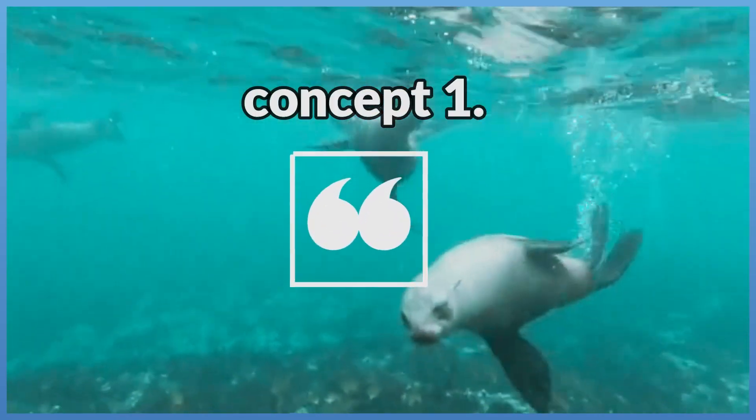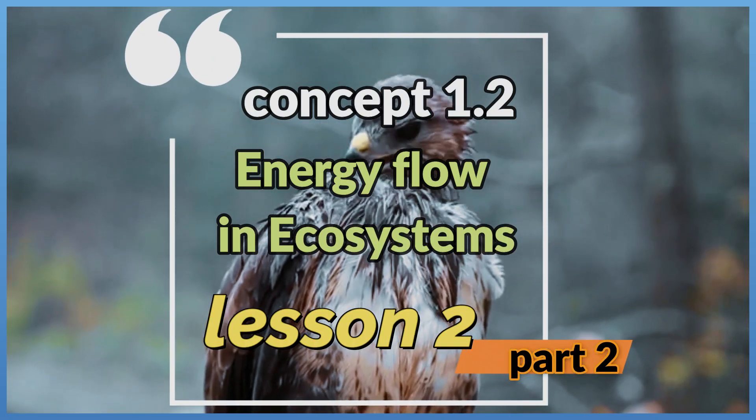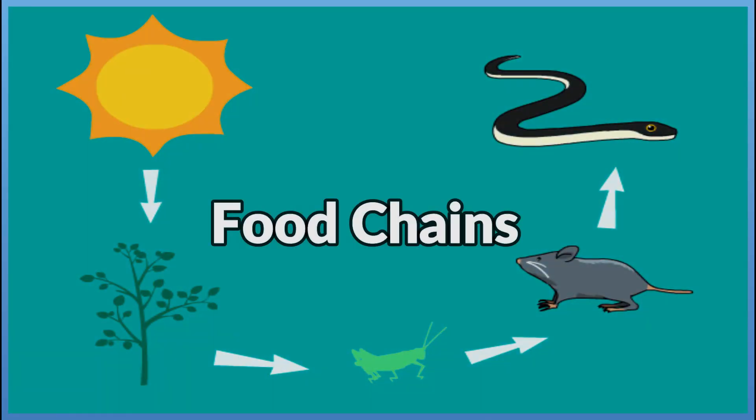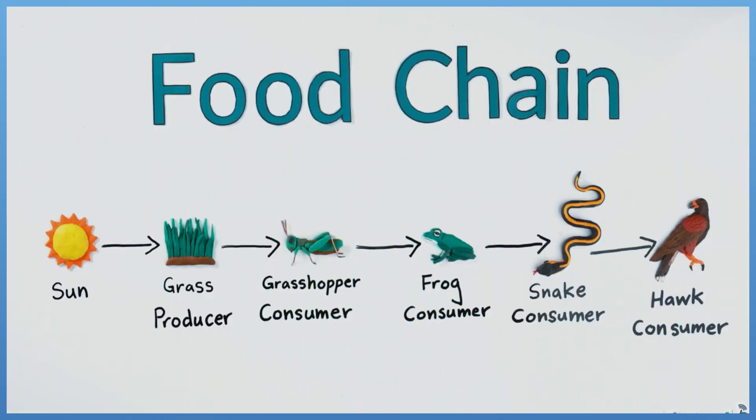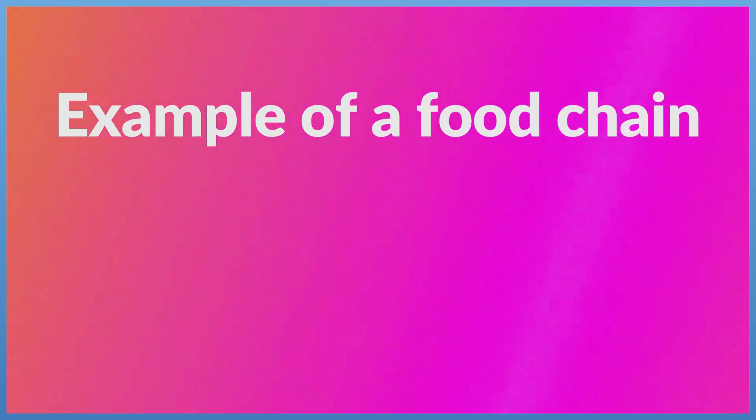Concept 1.2, Energy Flow in Ecosystems, Lesson 2, Part 2: Food Chains. A food chain is a model that shows one linear set of feeding relationships and movement of energy between living organisms. Example of a food chain: